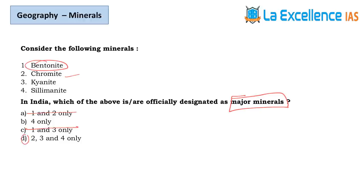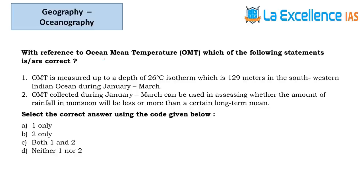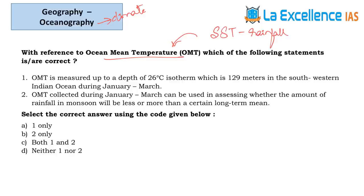The next question is about Ocean Mean Temperature, which can also be used under the climate section. Earlier we used Sea Surface Temperature to measure expected rainfall during monsoon. Now, compared to SST, Ocean Mean Temperature is a better measuring instrument — at least 80% higher chances of credibility for rainfall prediction. That is why we are shifting from SST to Ocean Mean Temperature.